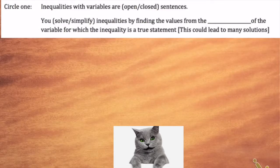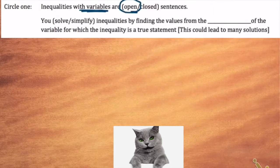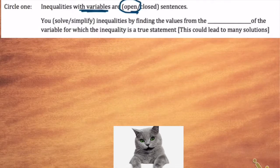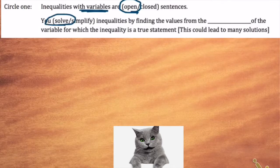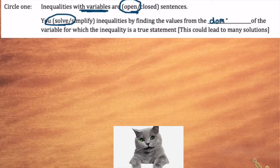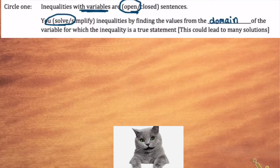Inequalities with variables — when we have variables, those are open sentences. You want to think about: do you solve or simplify inequalities by finding values? If you're finding values for the variable, you are solving inequalities. And you're finding values from the domain of the variable, which just means the choices that the variable could stand for.